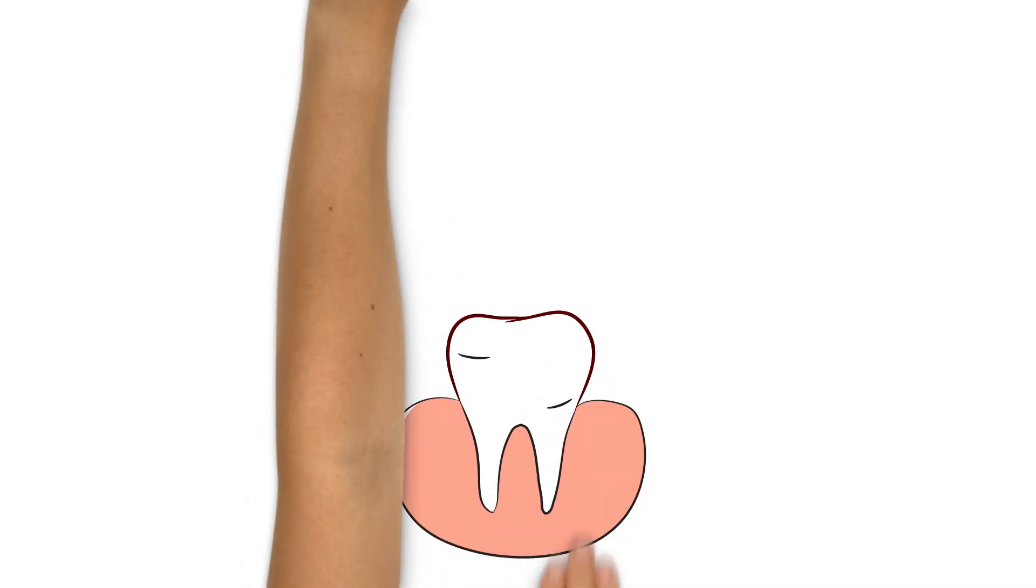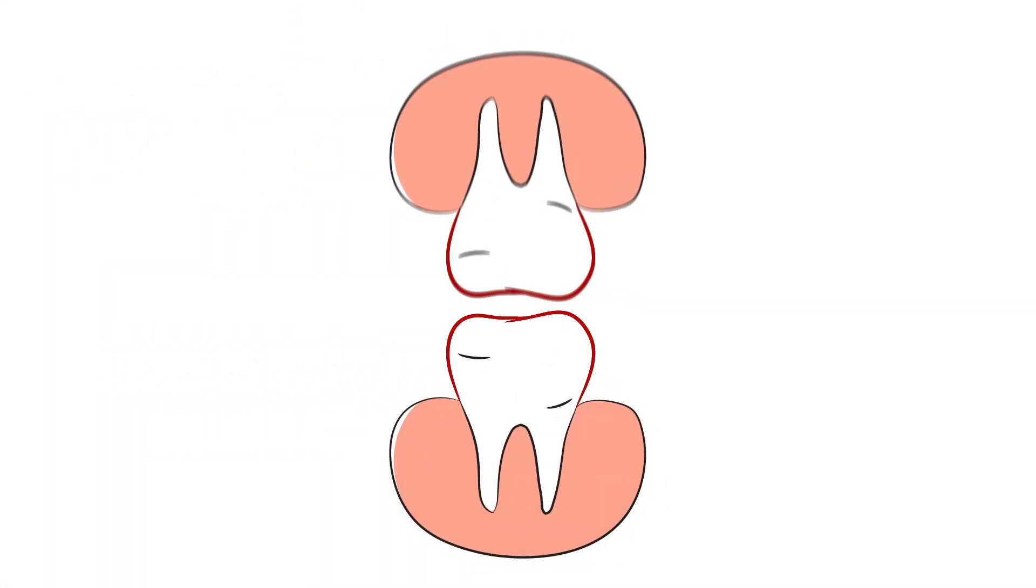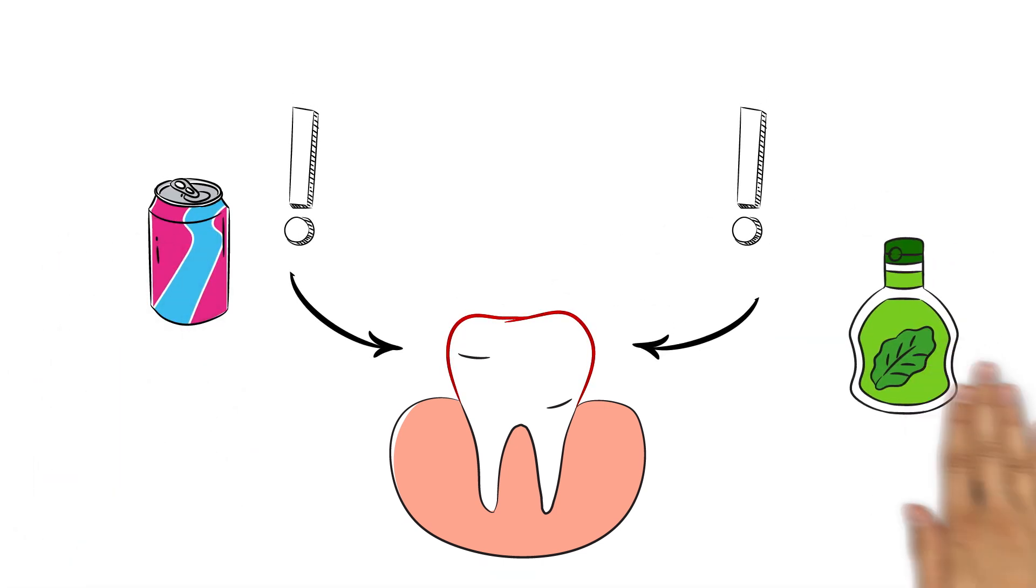It starts with the chewing of food and brushing when we clean our teeth. But above all, it is acidic drinks and foods, yes, even healthy fruit, that attack the enamel surface over time.